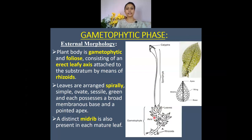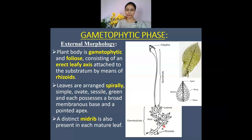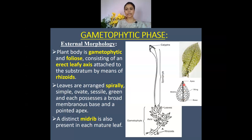The plant body is gametophytic and foliose, consisting of an erect leafy axis attached to the substratum by rhizoids for anchoring. Leaves are arranged spirally, simple in structure and anatomy, green in color, performing photosynthesis, and sessile — meaning they have no stalk. Microscopically, the leaf has a broad base, a pointed apex, and a distinct midrib.